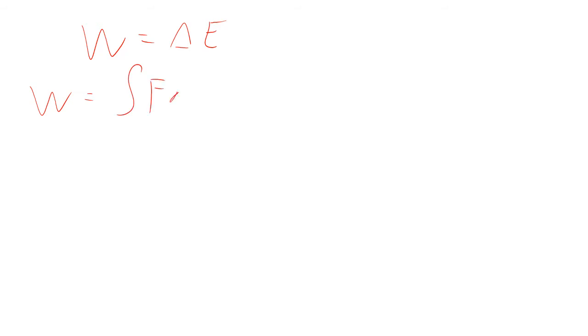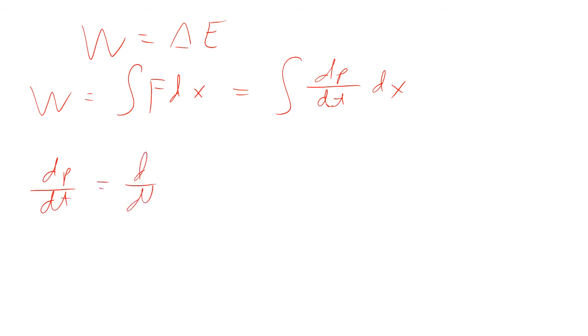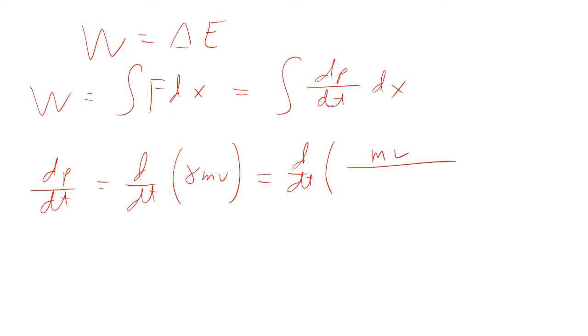Work is changing energy — remember that from physics 1. Work is the integral of f dx. F is dp/dt, so work involves dp/dt times dx. Let's figure out what dp/dt is. dp/dt is the derivative of momentum, and momentum is gamma mv, which is mv over the square root of 1 minus v-squared over c-squared.